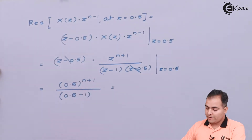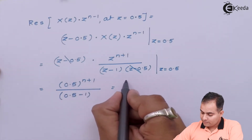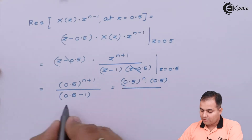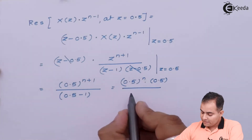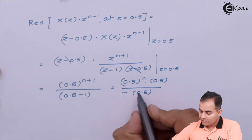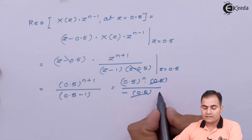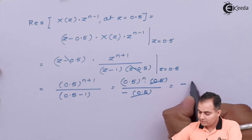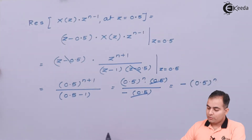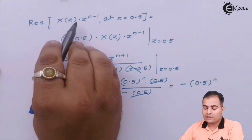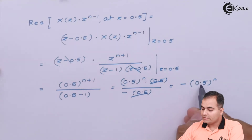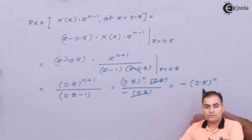Substituting Z = 0.5: the exponent becomes n−1, and the 0.5 factors cancel, giving the residue as −0.5^n. So the residue of X(Z)·Z^(n−1) at Z = 0.5 is −(0.5)^n.